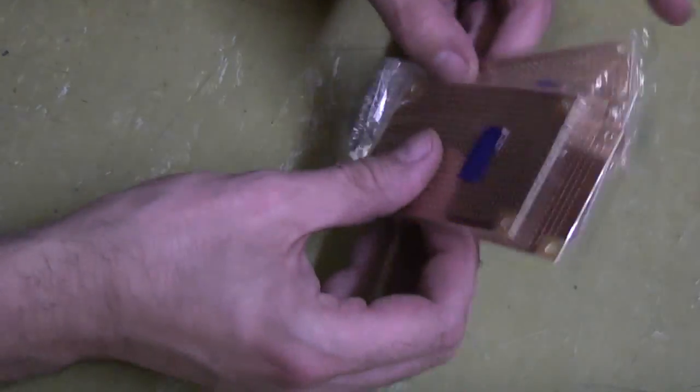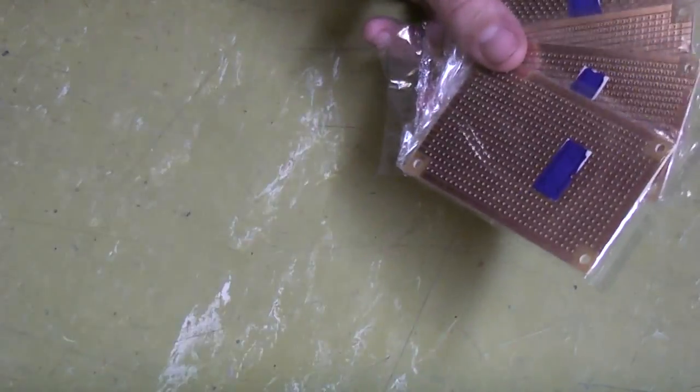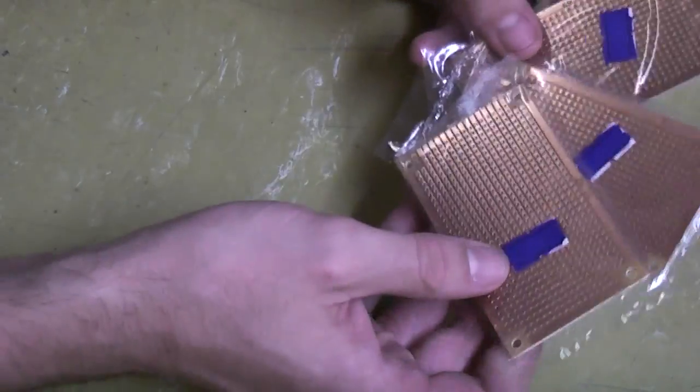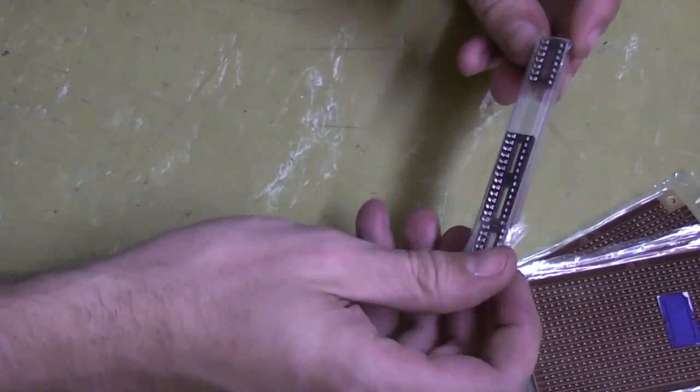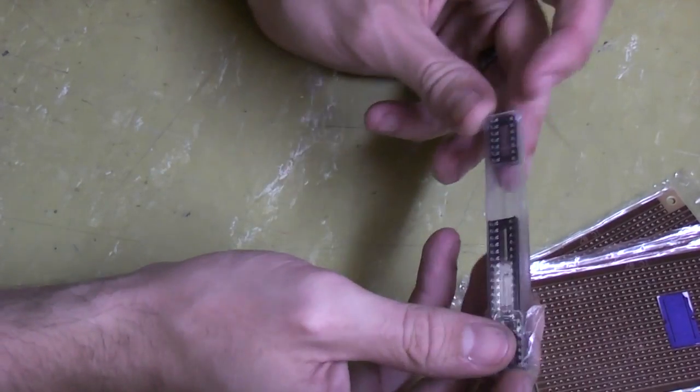Right guys, so we're going to look at getting our circuit board built. What we're going to need is obviously some Vero board, and we're also going to need some sockets. Now these are kind of optional.